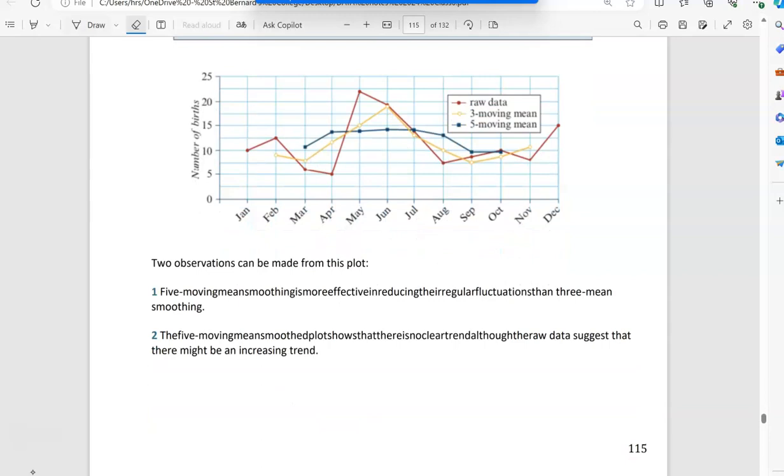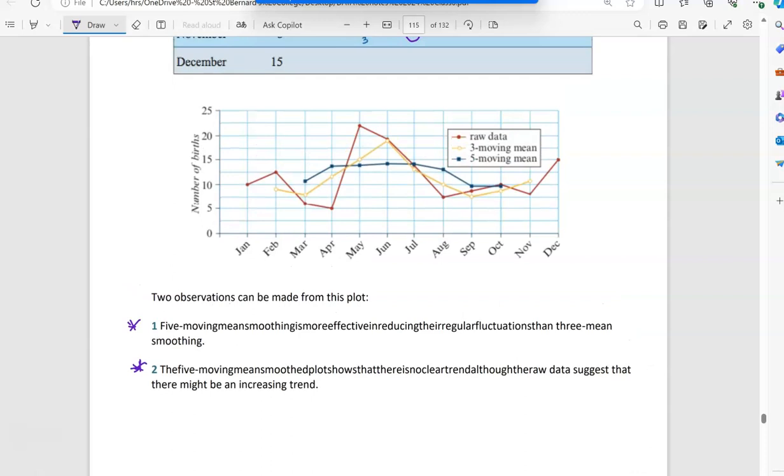Now if you have a look at the data, the red data was the original time series. The yellow and the blue line are the two different smooth values. You can see how the blue one, which is the five mean, has taken away a lot of those random fluctuations of the original red. So if you were asked which smoothing technique is better, we would pick the five mean one.